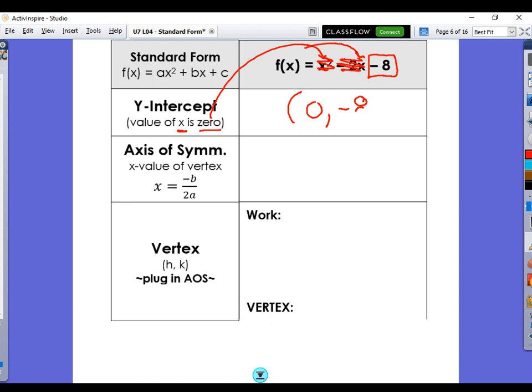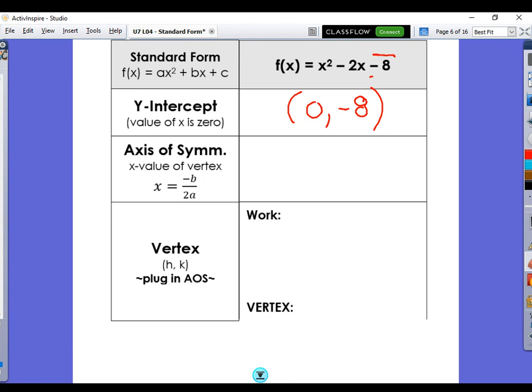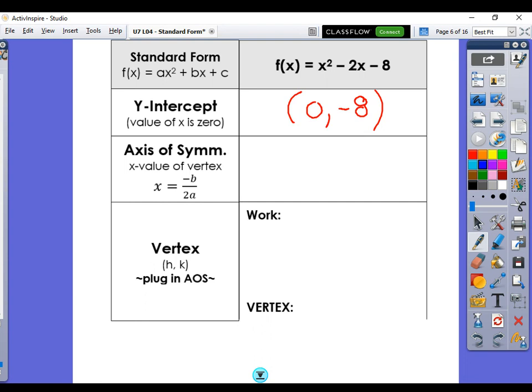So that's why the y-intercept is so easy. We tend to help people see that your y-intercept, from standard form, is always going to be that c value. Whatever your c value is, that's your y-intercept. So if you want to write that down, your y-intercept is always 0, c, whatever the c value is.